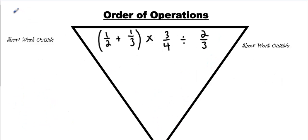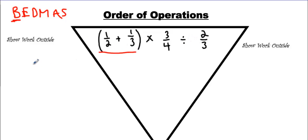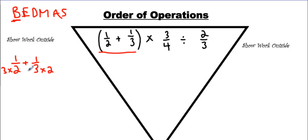Now we have BEDMAS again. We have a bunch of operations in this equation, and the first step is always brackets, so we will solve this on the side. We will go 1 half plus 1 third — common denominators, right? Some of you are like, 1 half and 1 third, that's going to be 2 over 5. It's not that simple.